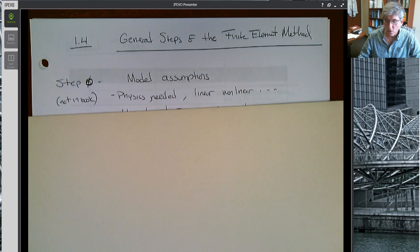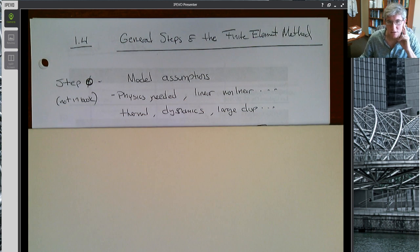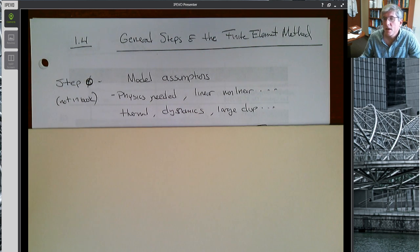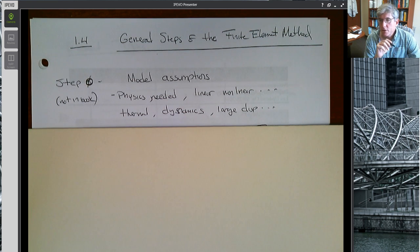The first step, which the book doesn't explicitly state but which I do think is very important, is step zero: basically define or at least put down what are your modeling assumptions. This is the step where we have to describe what physics we really need to correctly solve the problem. Every problem involves large finite deformation, nonlinear materials, temperature change, dynamics, but very often we can ignore a lot of these things. For example, if things move very slow, we can ignore the dynamics of the problem.